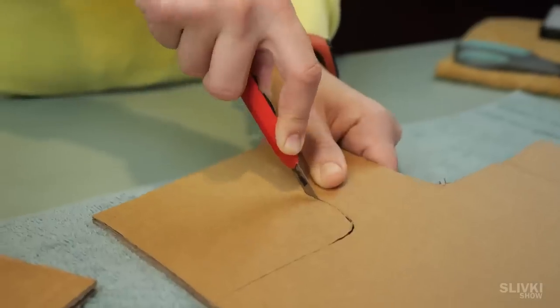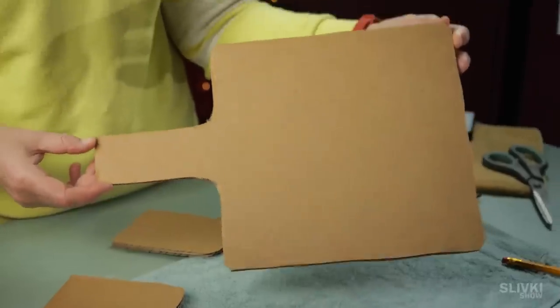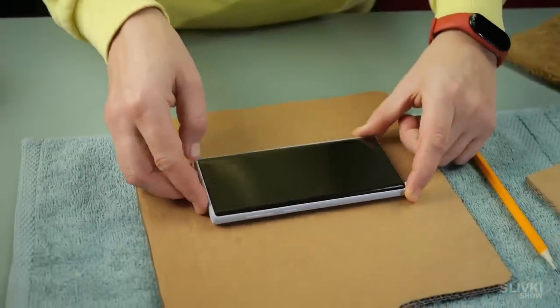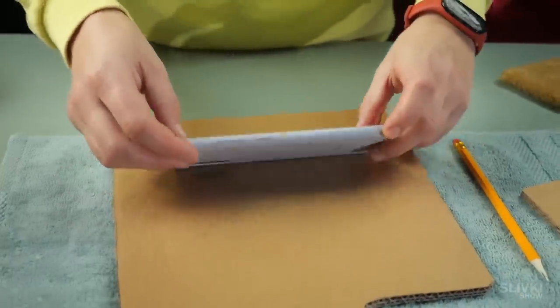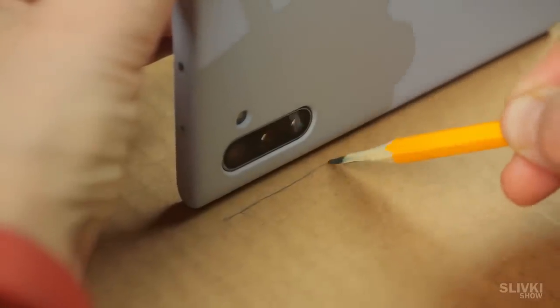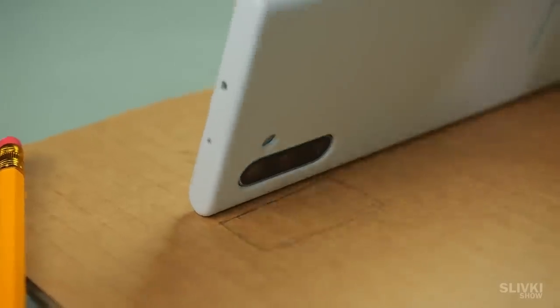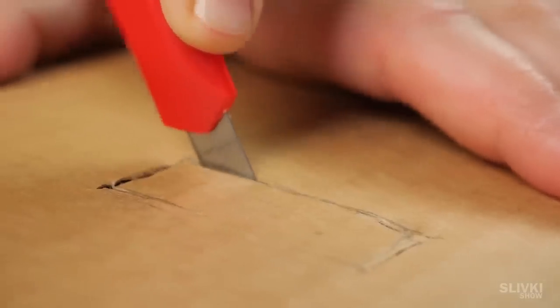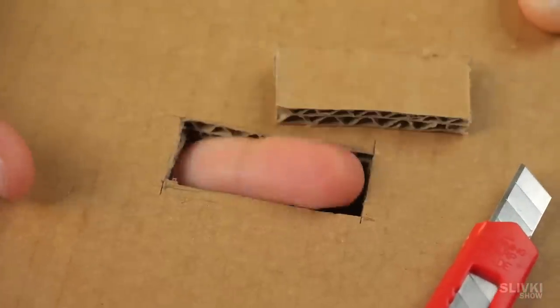From it you have to cut about this shape, something similar to a shovel. Now put a smartphone in its middle. Turn it on its side, look at the place where the camera is and draw a small rectangle there. Then cut it with a knife to get a nice hole for the camera in this place.